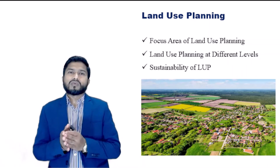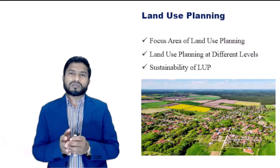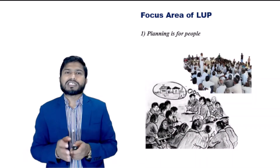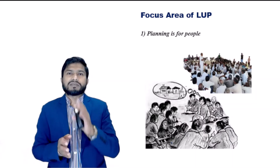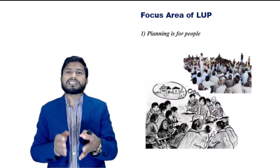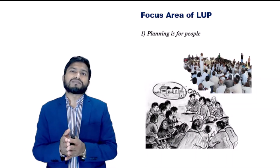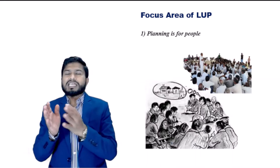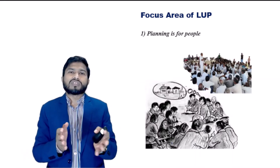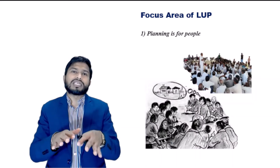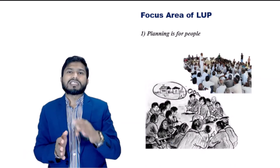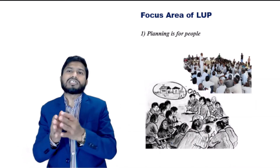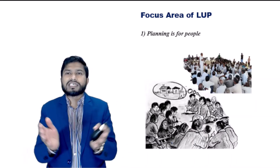Let's begin with the focus areas of land use planning. Planning for people is the first focus area. The planning process is driven by the demands of the people of the planning area. Local farmers, other land users and the rural community who depend on the land must accept the need for a change in land use, as they will have to live with its consequences.